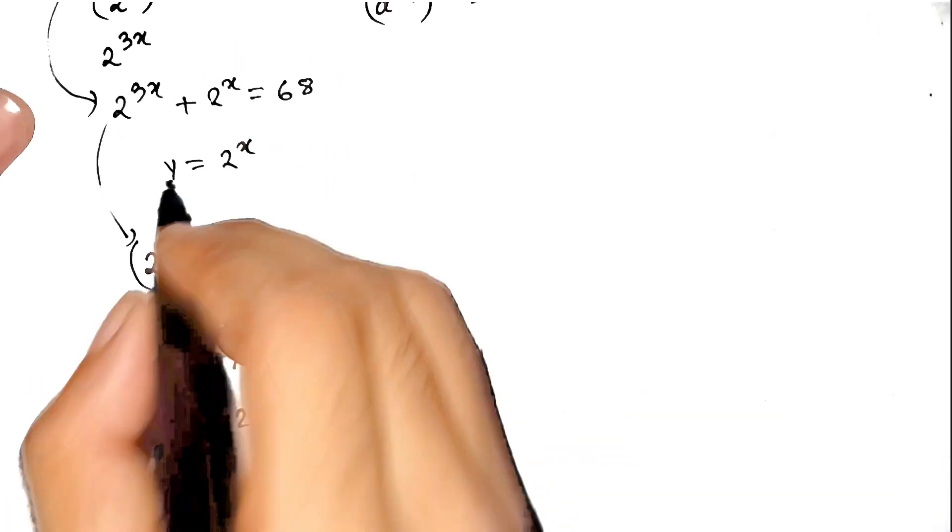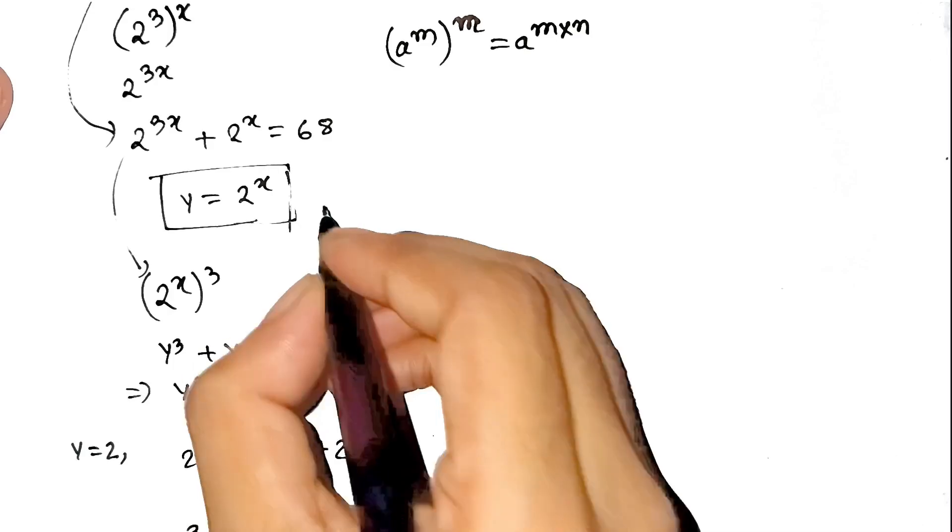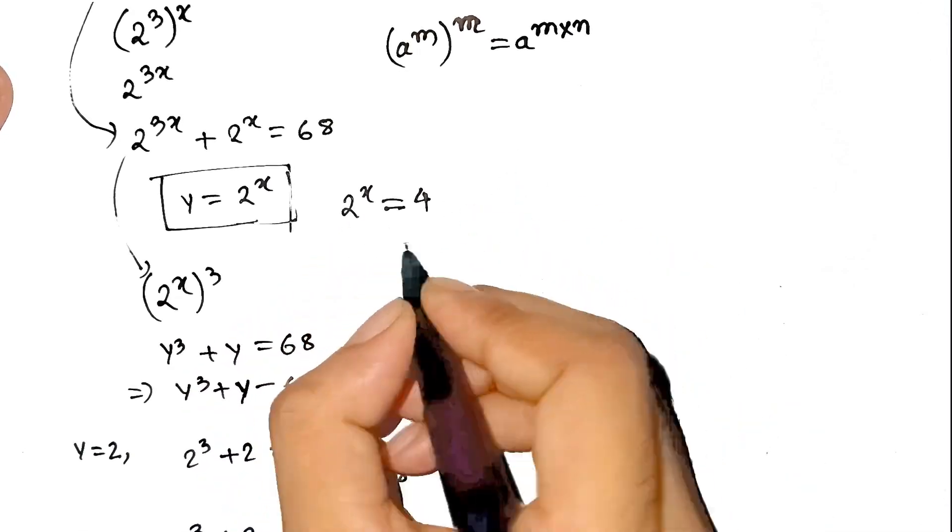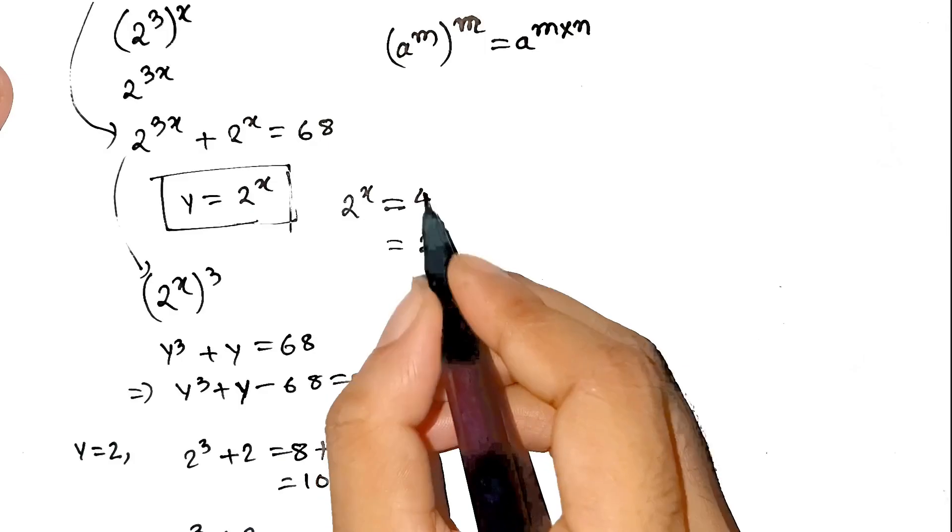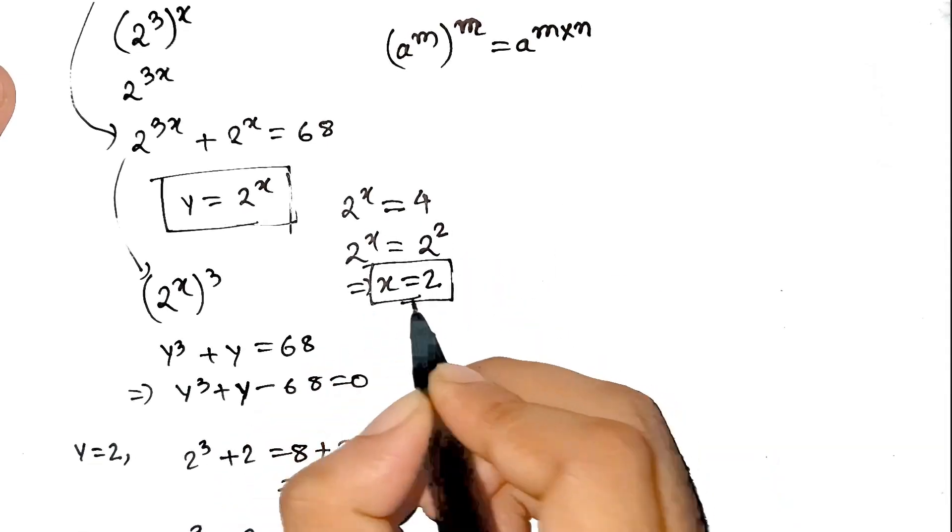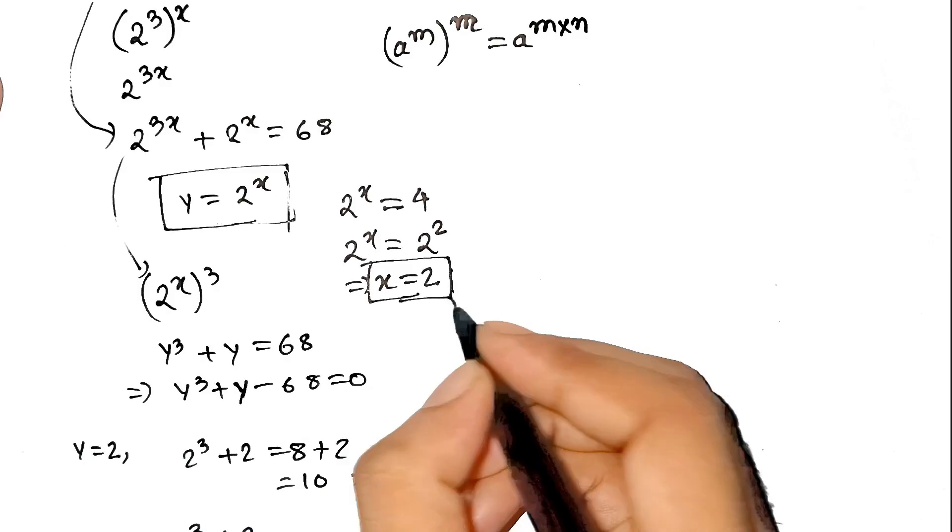And remember, y = 2^x. So 2^x = 4. Now what power of 2 gives us 4? Easy! 2^2 = 4. Which means x = 2. Boom. Answer? x = 2. Write it down before your brain forgets.